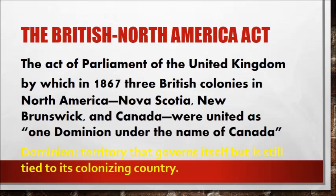In the 1800s, Britain feared the American westward expansion. To strengthen its position, Britain passed in 1867 the British North America Act. This created the Dominion of Canada. It included three British colonies: Nova Scotia, New Brunswick, and Canada. A dominion is a territory that governs itself, but is still tied to its colonizing country.